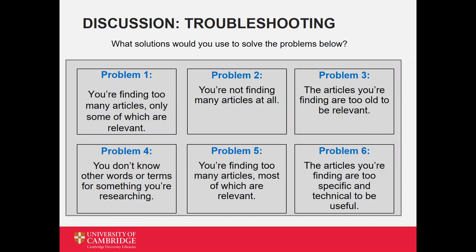For problem two, you're not finding many articles at all — I'd broaden my search to a more general search, or revisit the search strategy and the keywords I'd chosen, and perhaps even talk to my librarian to see if they had any suggestions. For problem three, the articles I'm finding are too old to be relevant — this is where filters come in and I can specify the time period I'm looking at.